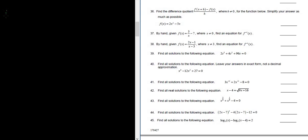Let's work out problem number 40. Find all solutions to the following equation. So we have x to the 4th minus 12x squared plus 27 equals 0.